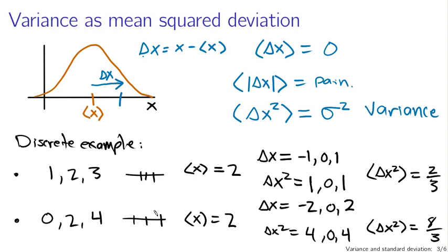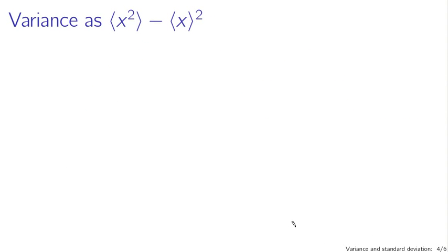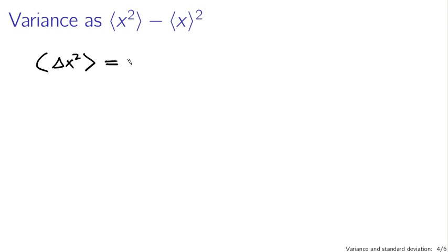This is not the easiest way of calculating the variance, though. It's actually much easier to calculate the variance as the expected value of the squared quantity minus the square of the expected value of the quantity itself — the mean of the square minus the square of the mean. You can see how this results fairly easily by plugging through some basic algebra. Given our definition, the expected value of delta x squared, we're calculating an expected value for a continuous distribution.